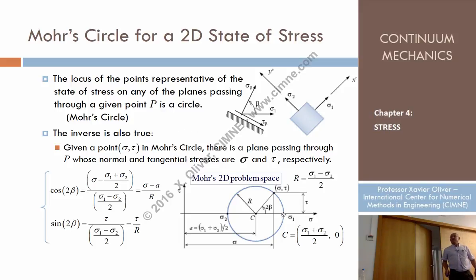I have to move from the representative point of sigma 1 in the same sense that the angle beta, and then the point twice this angle. And the point I obtain provides me sigma and tau, which are the ones that I'm looking for.